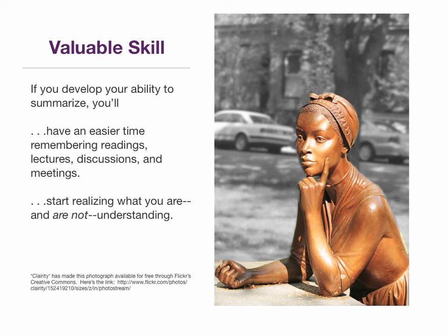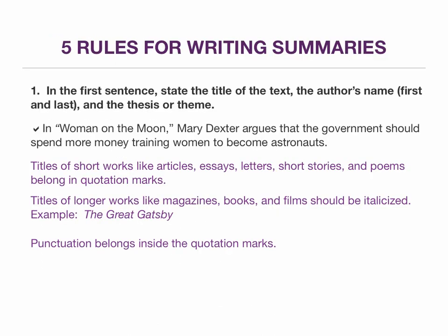So now I want to get into the five basic rules for writing good summaries. Rule one: in the first sentence, you need to state the title of the text, the author's name, and the thesis or theme. Here's an example: "In Woman on the Moon, Mary Dexter argues that the government should spend more money training women to become astronauts."